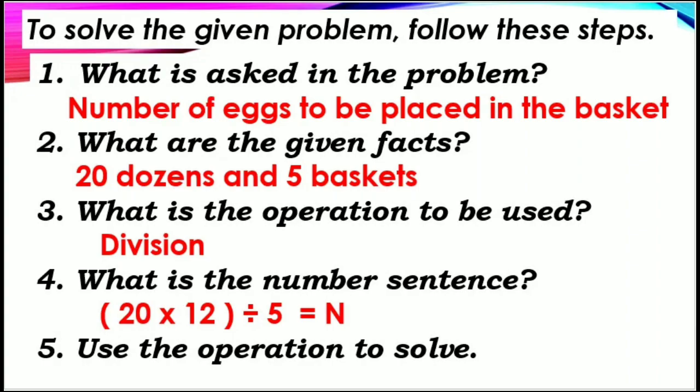So, we are looking for the number of eggs to be placed in each basket. The given facts are 20 dozens and 5 baskets. We are going to use division to solve the problem. We will write the number sentence as: 20 × 12 (because of the dozens) ÷ 5 = N.